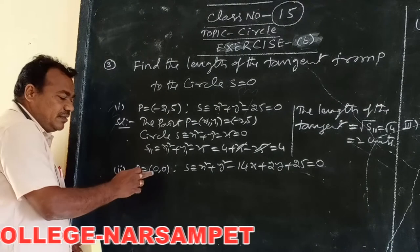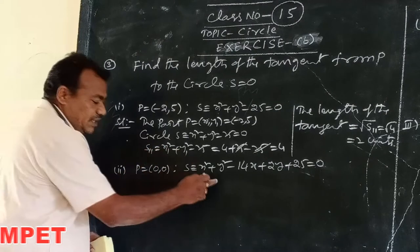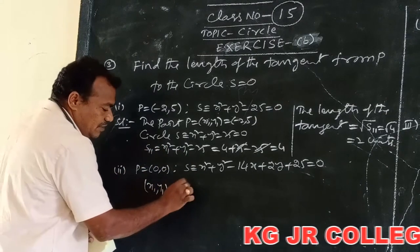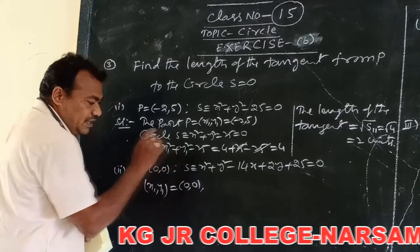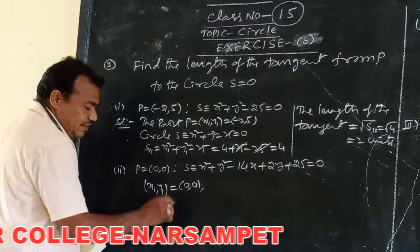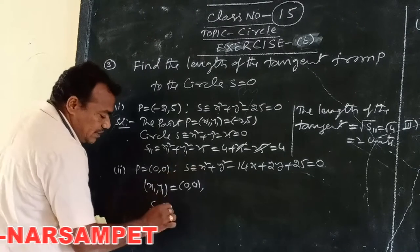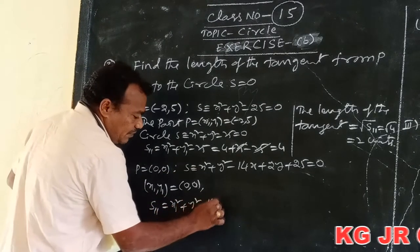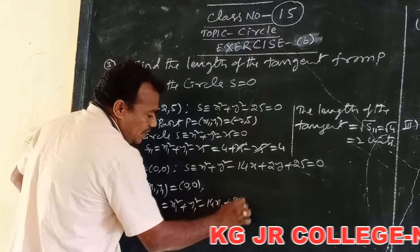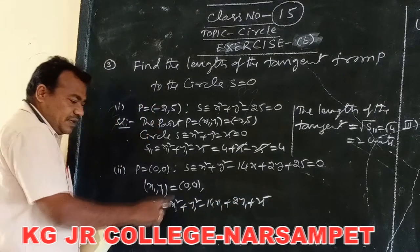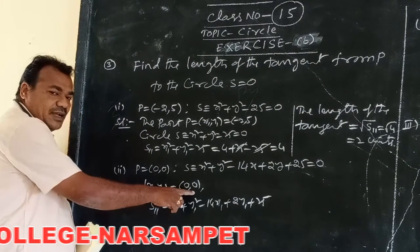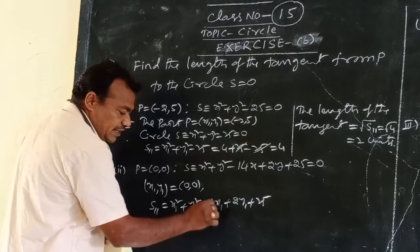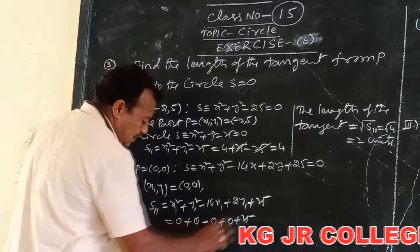This is another problem: to find out the length of the tangent drawn from the origin to the circle. The given point coordinates we consider are (x₁, y₁) = (0, 0). And the circle is S. Now taking S₁₁. S₁₁ = x₁² + y₁² - 14x₁ + 2y₁ + 25. Put x₁ = 0: 0 + 0 - 0 + 0 + 25.